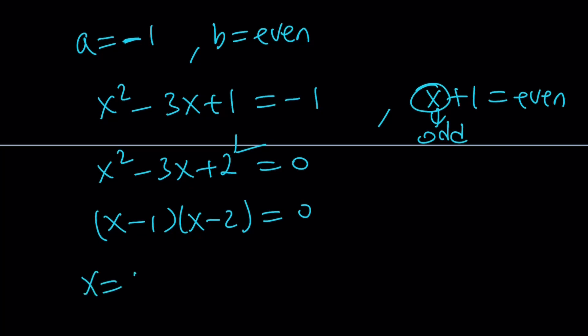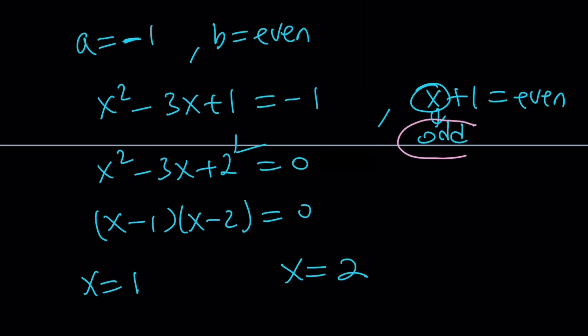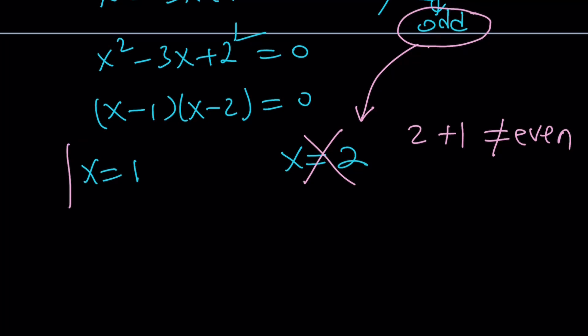From here we get two solutions, x equals 1 and x equals 2. But remember, x must be odd. So x must be odd, so we're going to reject 2. 2 is not going to work because it's not odd. And you're going to notice that if you replace x with 2, 2 plus 1 does not equal even. So x equals 1 works because it's odd. That gives us another solution.